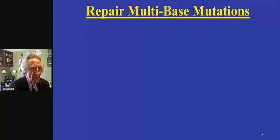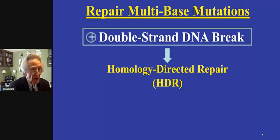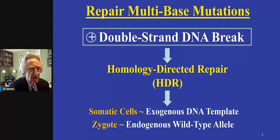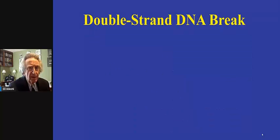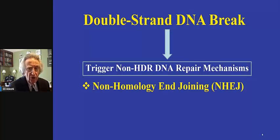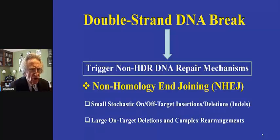It allows us to repair multi-base mutations, but that requires the generation of a double-strand DNA break, which inevitably will be subjected to homology-directed repair, or HDR for short, which in somatic cells likely will require an exogenous DNA template, and in the zygote possibly could rely on an endogenous wild-type allele. The double-strand DNA break, however, prompts a cellular repair mechanism known as non-HDR DNA repair, known as NHEJ, which gives rise to small stochastic on- and off-target insertions and deletions, also known as INDELs, and to large on-target deletions and complex rearrangements. That is, of course, a challenge.